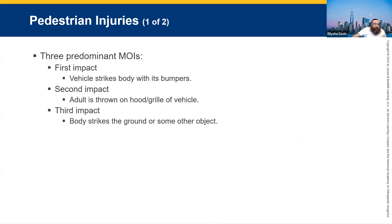Pedestrian injuries — one thing I like to talk about is the difference between adults and children. When a child gets hit by a car, depending on the age, they will get hit in the abdomen, the chest, or the head. Adults will typically get hit in the pelvis and down — femurs and lower legs. It makes a huge difference when it comes to the size of the patient.